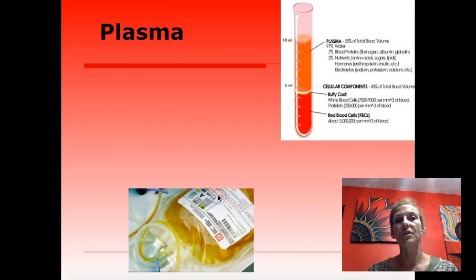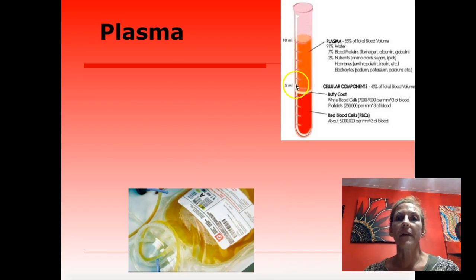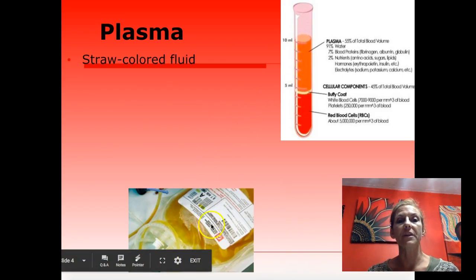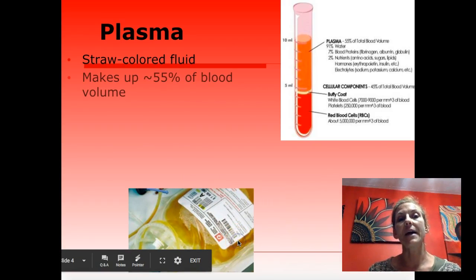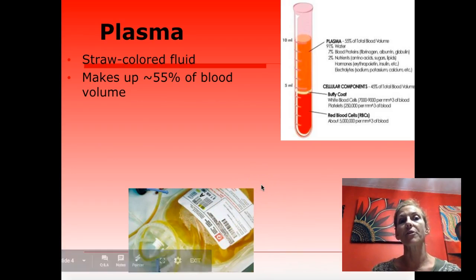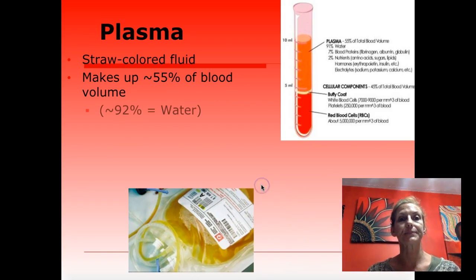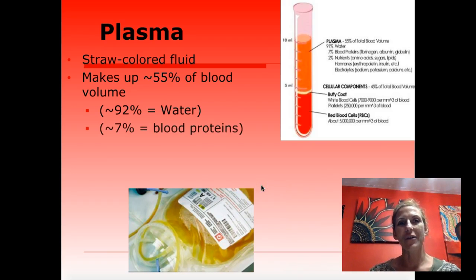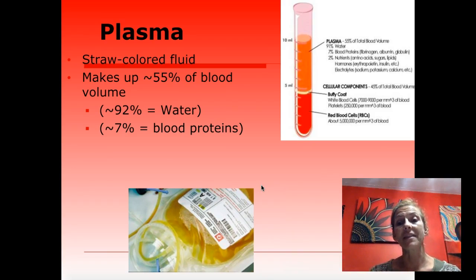Starting with plasma: plasma makes up the majority of your blood. You can see plasma that has been separated — it is straw in color. It makes up about 55% of your blood by volume, and the majority of that plasma is water — about 92% of it is water. The next largest component within the plasma would be blood proteins.